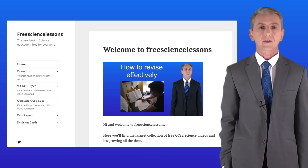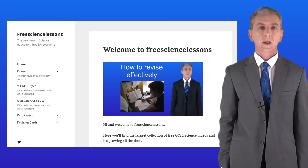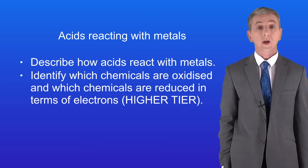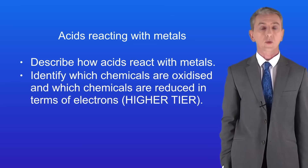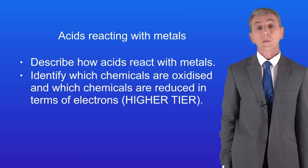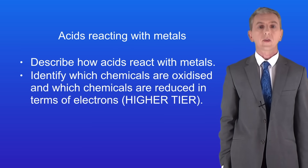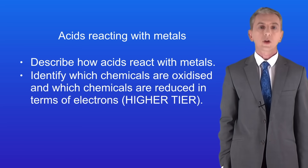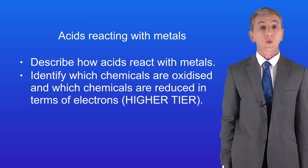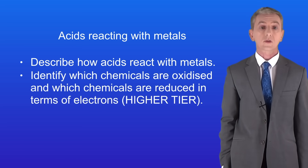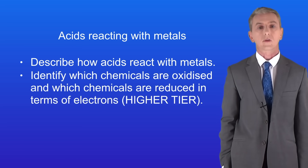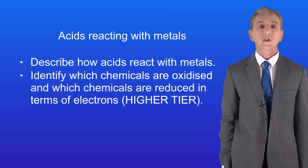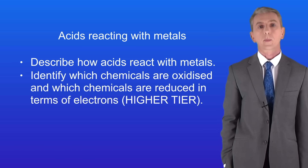Hi and welcome back to freesciencelessons.co.uk. In this video we're continuing to look at the reactions of acids with metals, but now we're looking at these in terms of oxidation and reduction. You should be able to identify which chemicals are oxidised and which chemicals are reduced in terms of electrons, and this is for higher tier students only.